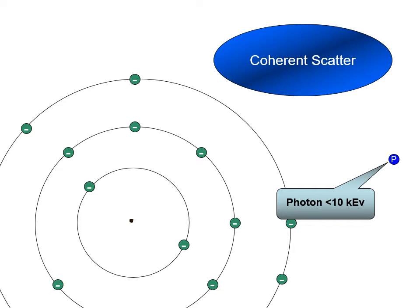In this diagram, we will see our atom to the left and the photon of x-ray energy to the right. In this simulation, the photon will have a very low energy, let's say less than 10 keV.